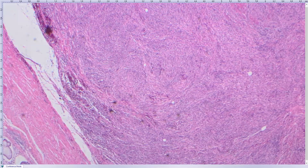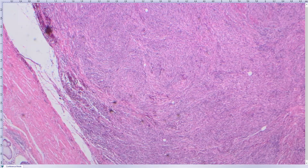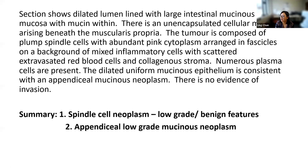We didn't need to go further at the moment. I'll go for a low-grade appendiceal mucinous neoplasia, and try to work out this spindle cell proliferation under the muscle layer. Perfect. So this is how I would write it up. I wrote about six lines because there are two things going on, and you want to look for your positives instead of writing a really long waffly description. My summary would be 'spindle cell neoplasm' — I've decided it looked low grade with benign features — and my second is an appendiceal low-grade mucinous neoplasm, because from this slide I can't see any evidence of invasion.